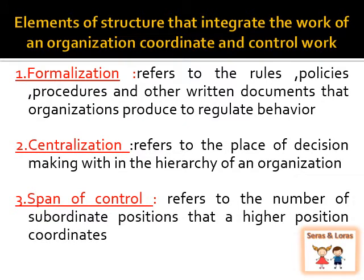The elements of structure that integrate and coordinate the work of an organization are divided into three types. The first is formalization, which refers to the rules, policies, procedures, and other written documents that the organization produces to regulate the behavior of each employee. These are formal rules, policies, and procedures formulated by the organization to regulate or control employee behavior — that is known as formalization. The second is centralization, which means the place of decision-making within the hierarchy of an organization. Decision-making is taken by people at the higher level or chief executive level, depending upon the hierarchy.